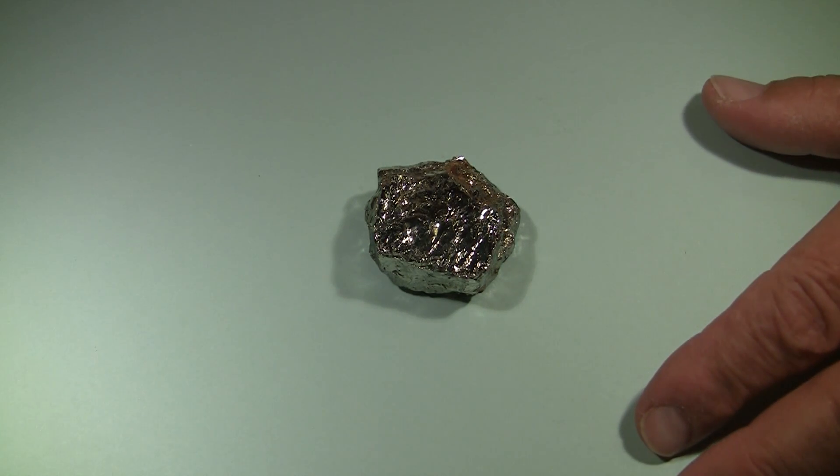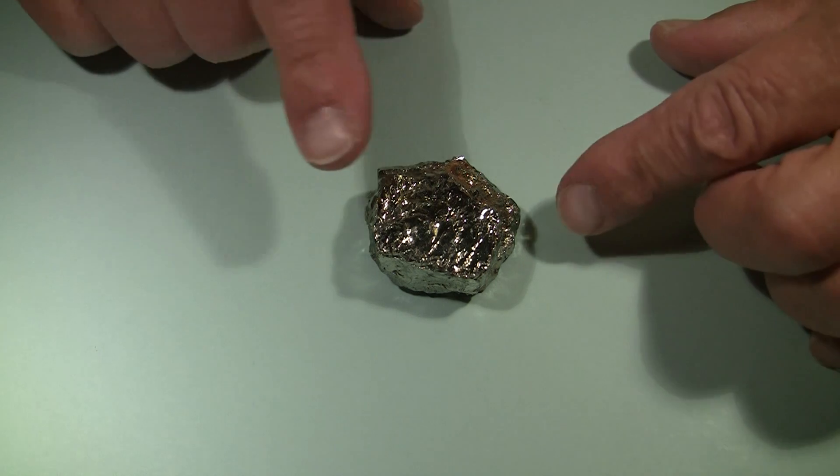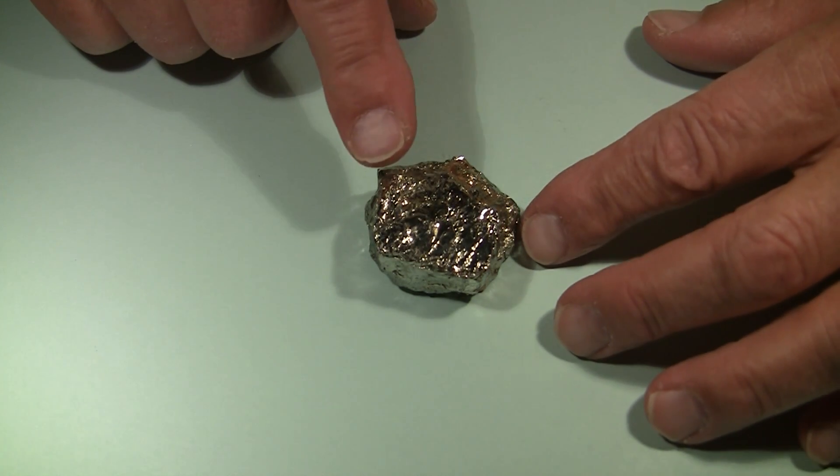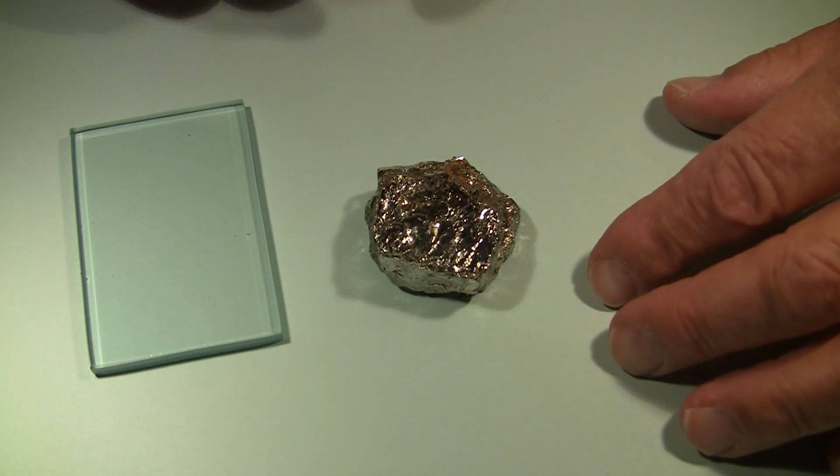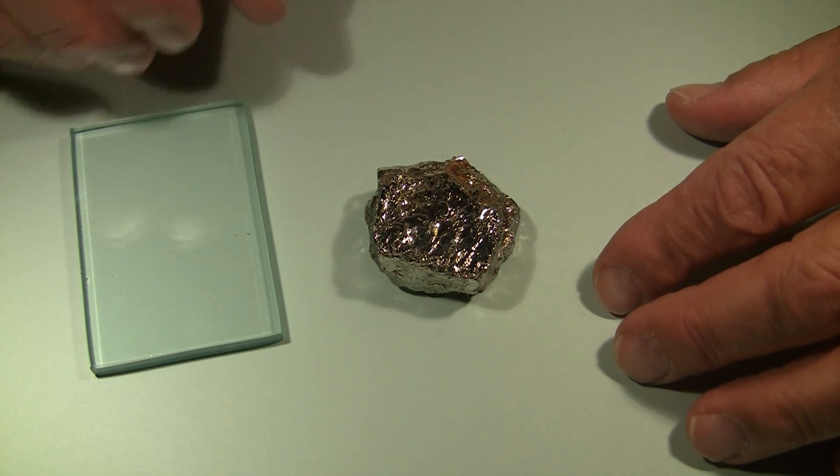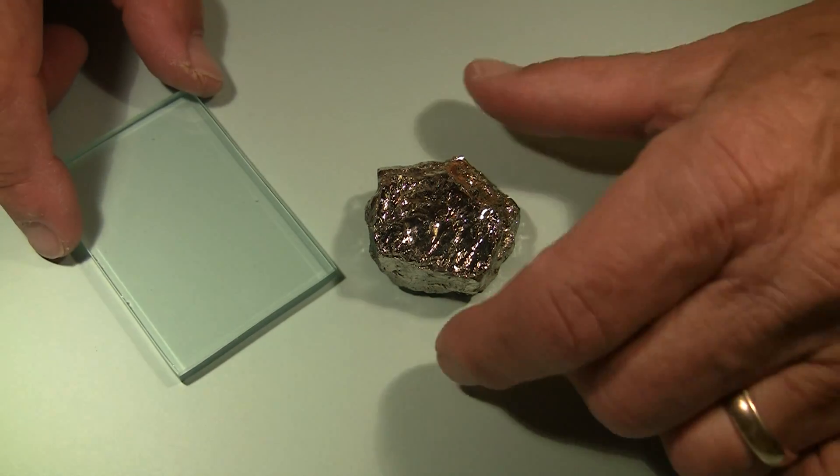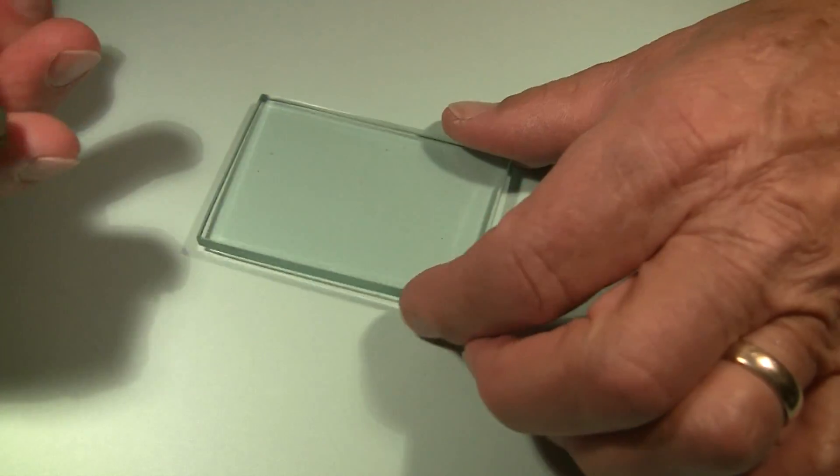This metallic mineral is either pyrite or chalcopyrite. Hardness of pyrite is 6.5 and should scratch a piece of glass. Hardness of chalcopyrite is only 3 and will not scratch glass. That seems like a pretty easy test to perform on this specimen. We've got the piece of glass here.